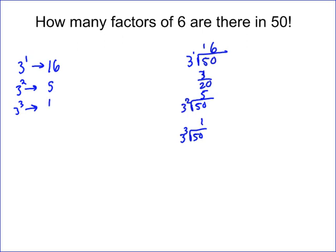We don't need to consider 3 to the fourth because 3⁴ is 81 and that doesn't go into 50. Adding up: 16 plus 5 plus 1 equals 22. So there are 22 factors of 6 in 50 factorial, because there are at least 22 twos and 22 threes — pair them all up and you get 22 sixes.